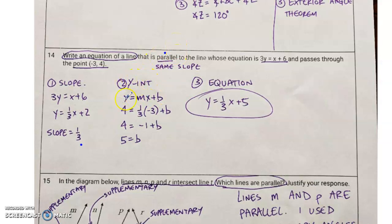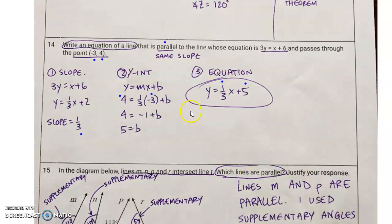For step number two, we need to find the Y intercept, so we get Y equals MX plus B out, our old tool, Y equals MX plus B. We substitute in four and negative three for Y and X respectively, because this is the X value and this is the Y value. Once we substitute those in, we solve for B and we get B is equal to five. Here's my equation, slope, Y intercept, bada bing, bada boom.